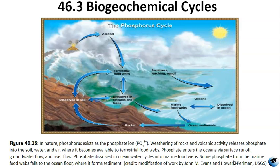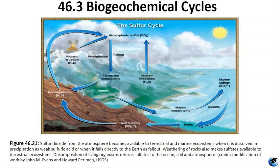Sulfur is used by living organisms in the formation of disulfide bonds in proteins. Sulfur cycles between oceans, land, and the atmosphere. Atmospheric sulfur, mainly sulfur dioxide, enters from organic decomposition, volcanic activity, and human burning of fossil fuels. On land, sulfur is deposited through precipitation, fallout, rock weathering, and geothermal vents. Terrestrial ecosystems use soil sulfates and release sulfur back into the atmosphere as hydrogen sulfide upon decomposition. Human activities, particularly burning fossil fuels like coal, disrupt the sulfur cycle — for example, increased hydrogen sulfide emissions lead to the formation of acid rain, which causes environmental harm by lowering the pH of water in lakes and rivers. Here is a video that summarizes the cycling of biogeochemicals on Earth.